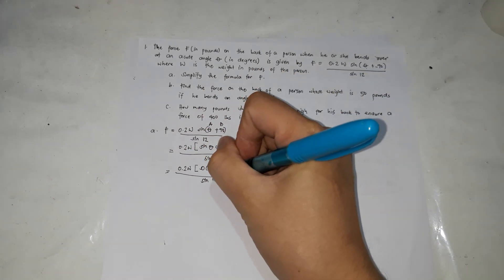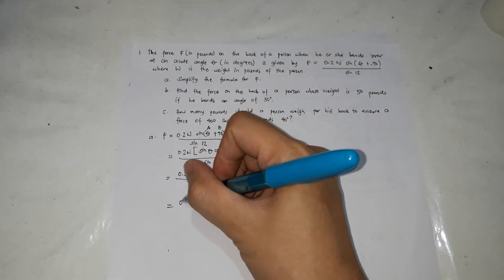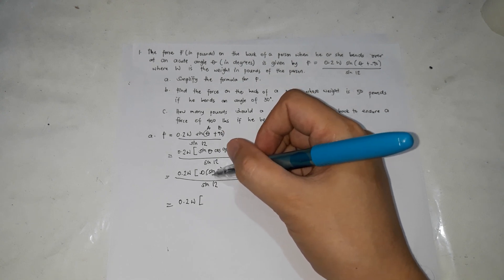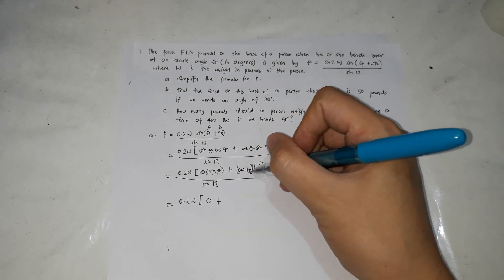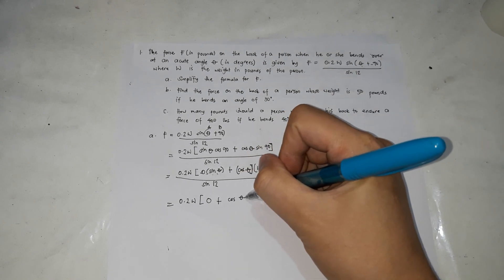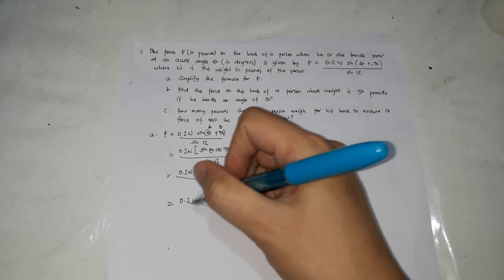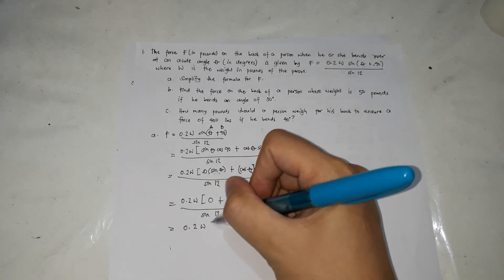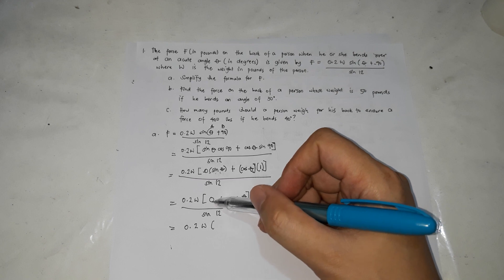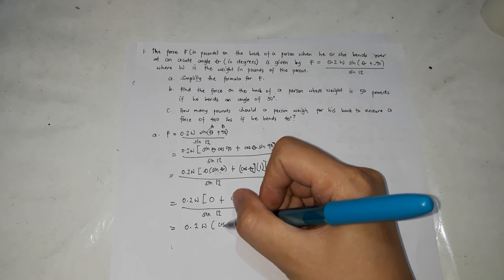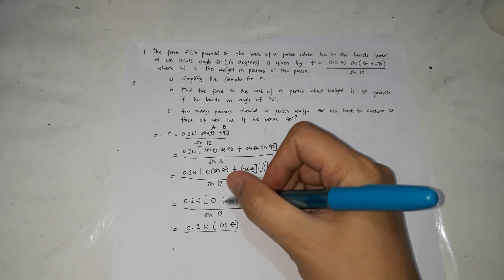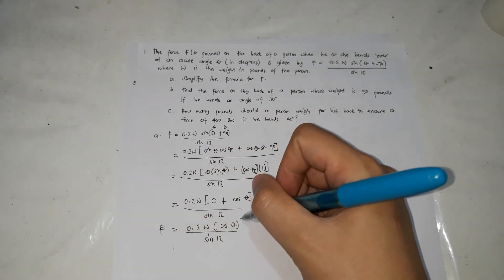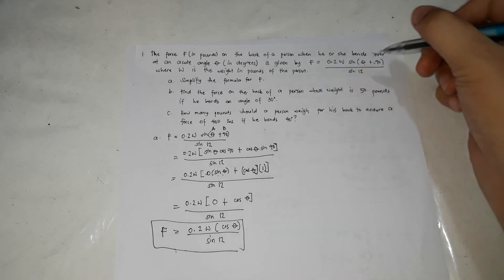Over sine 12, which equals 0.2W. Any number multiplied by 0 is 0, plus cosine theta times 1 is cosine theta over sine 12, which equals 0.2W. Any number added to 0 is itself by the identity property of addition. So 0 plus cosine theta is cosine theta over sine 12. So this is now the simplified form of the formula. From this one we have this simplified form.